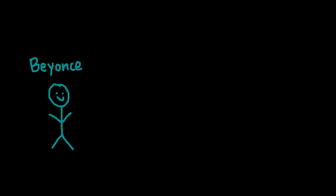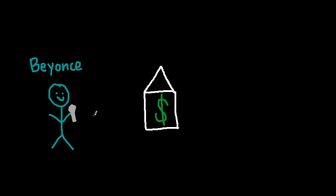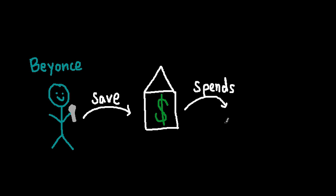To answer this question I want to use an analogy first. Let's take for example Beyonce. She earns money as a singer, actress, and performer. Some of it she spends and some of it she saves in the bank. So we have a bank — she puts the money in the bank and keeps it there for storage. If she needs to purchase anything she can go to the bank and get more money. In one scenario, let's say she is spending more than she saves.